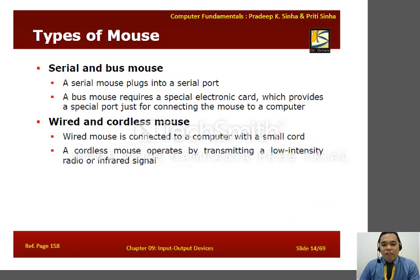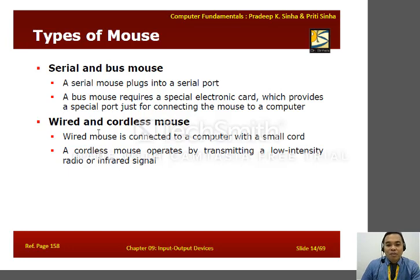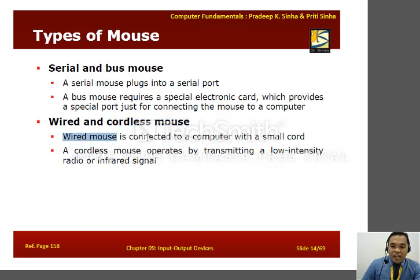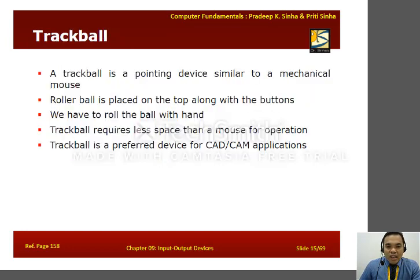We also have serial and bus mouse. A serial mouse is plugged into the serial port of the system unit, while a bus mouse requires a special electronic card that provides a dedicated port for connecting the mouse to a computer. Additionally, there are wired and cordless mice. A wired mouse is connected to a computer with a small cord, while a cordless mouse operates by transmitting a low-intensity radio or infrared signal.